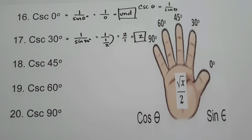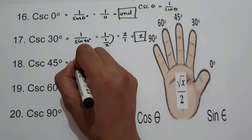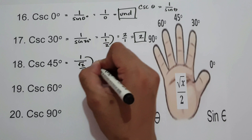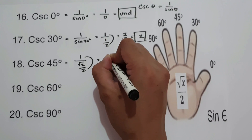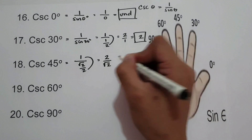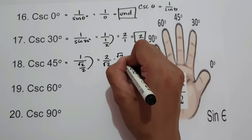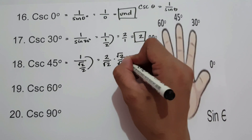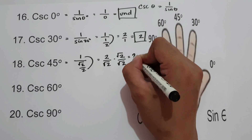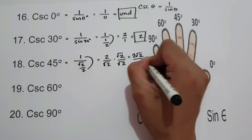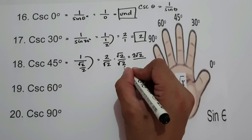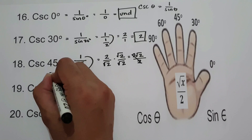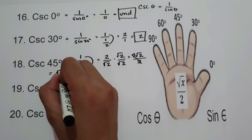For cosecant 45°, that is 1 over sine 45°, which is 1 over (square root of 2 over 2). Multiplying gives 2 over square root of 2. Rationalizing by multiplying numerator and denominator by square root of 2: we get 2 square root of 2 over square root of 4, and square root of 4 is 2. Canceling gives cosecant 45° equals square root of 2.